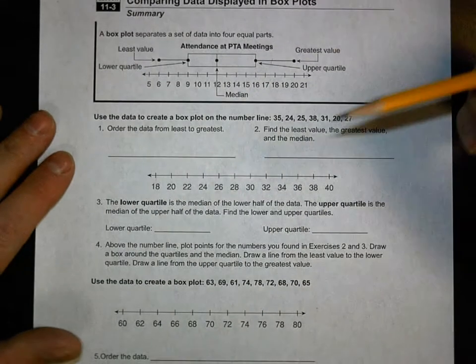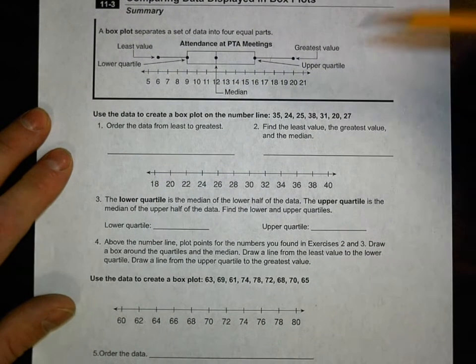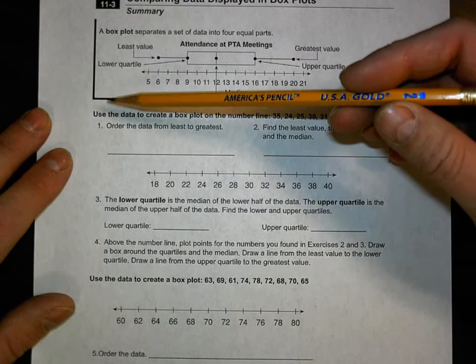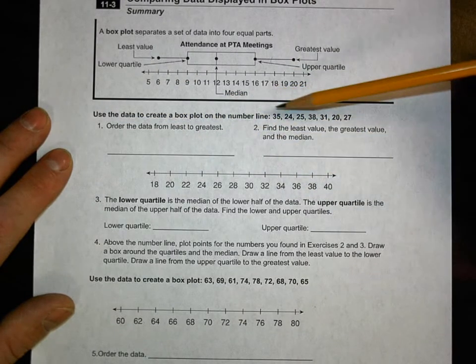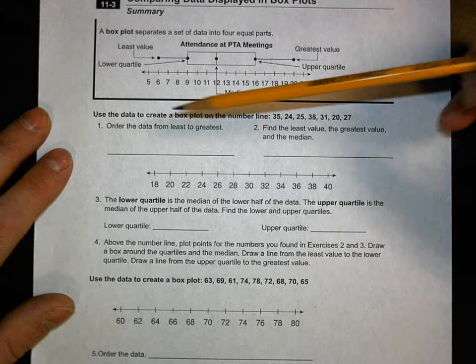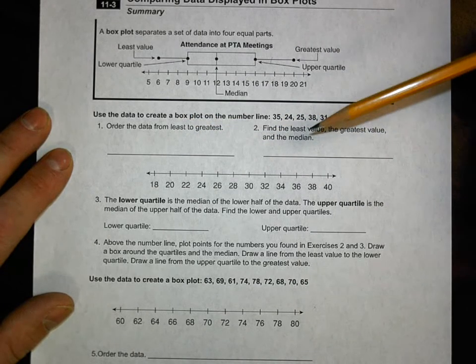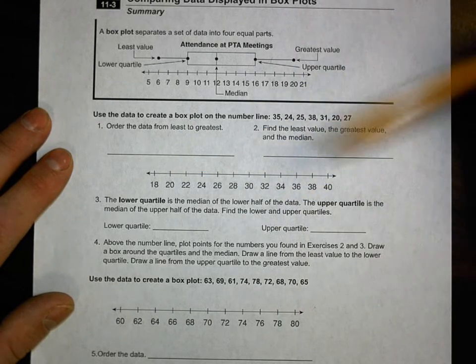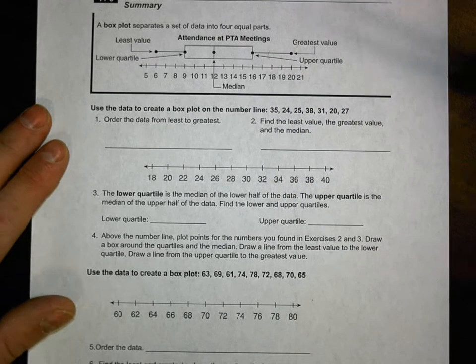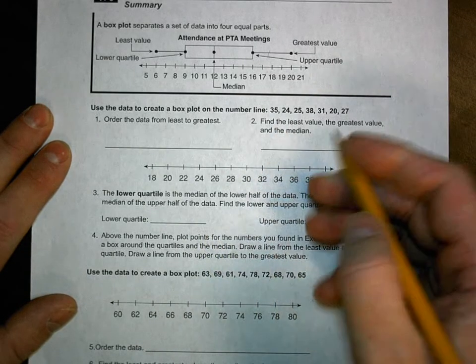So let's go down and look at some problems. Now I'm going to tell you one of the easiest ways to make a box plot is first start by plotting the data. And we'll see it says we need to use data to create a box plot on the number line. This is the number line. And here's our data. So question one says order the data from least to greatest. And question two says find the least value, the greatest value, and the median. Well I will tell you that all of these are easier to find if you first plot the information on the number line.